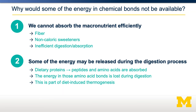Another reason energy may not be available is if it is used up during the digestion process. For example, dietary proteins are broken down into peptides and amino acids before absorption. The processes of breaking down those peptides and amino acids, transporting them into and out of the gastrointestinal system, and absorbing them into target tissues all consume energy. This energy used during digestion is known as diet-induced thermogenesis, which was the fourth component of energy expenditure mentioned earlier.